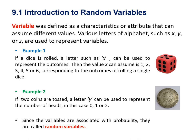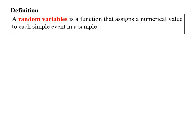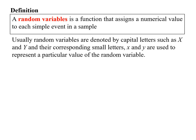Since the variables are associated with probability, they are called random variables. A random variable is defined as a function that assigns a numerical value to each simple event in a sample. Usually, random variables are denoted by capital letters such as X and Y, and their corresponding small letters x and y are used to represent a particular value of the random variable.